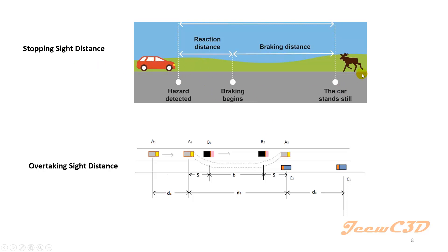For example, a car is driving and there is an animal on the road. The driver detects the animal and decides to brake and stop the vehicle. During the time the driver is deciding to brake, the vehicle travels some distance — this is the reaction distance. Once the driver applies the brake, the vehicle decelerates and stops just before hitting the animal. The total distance traveled from detection to stopping is called stopping sight distance.